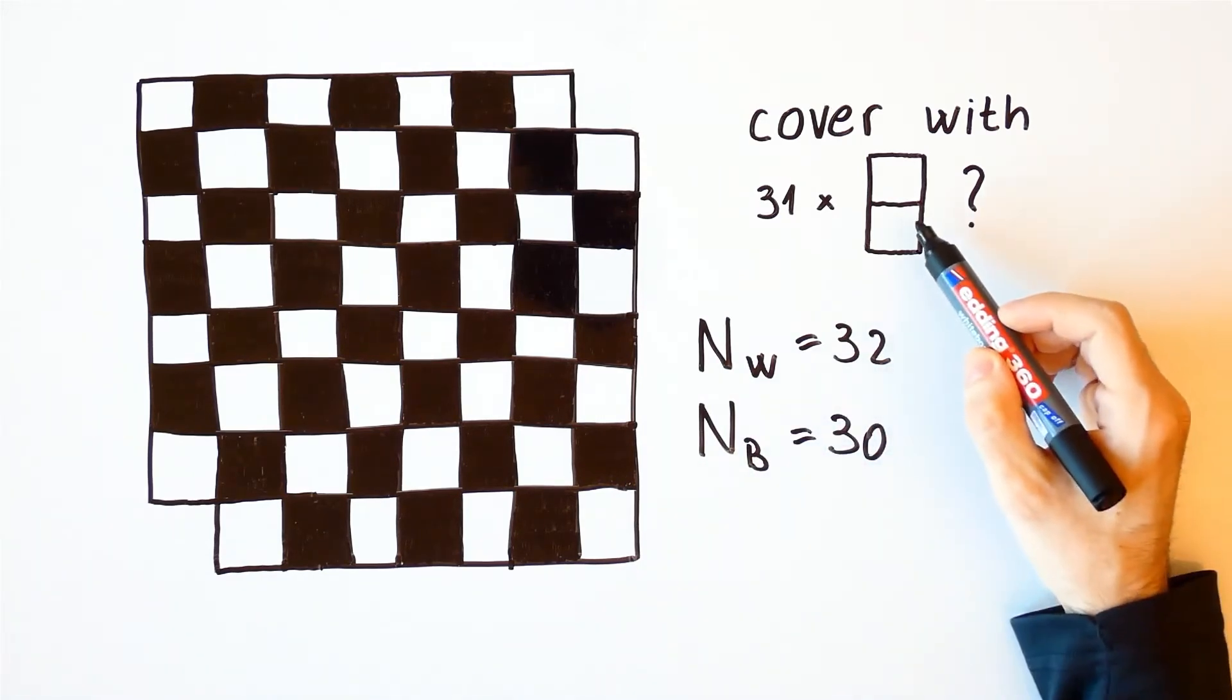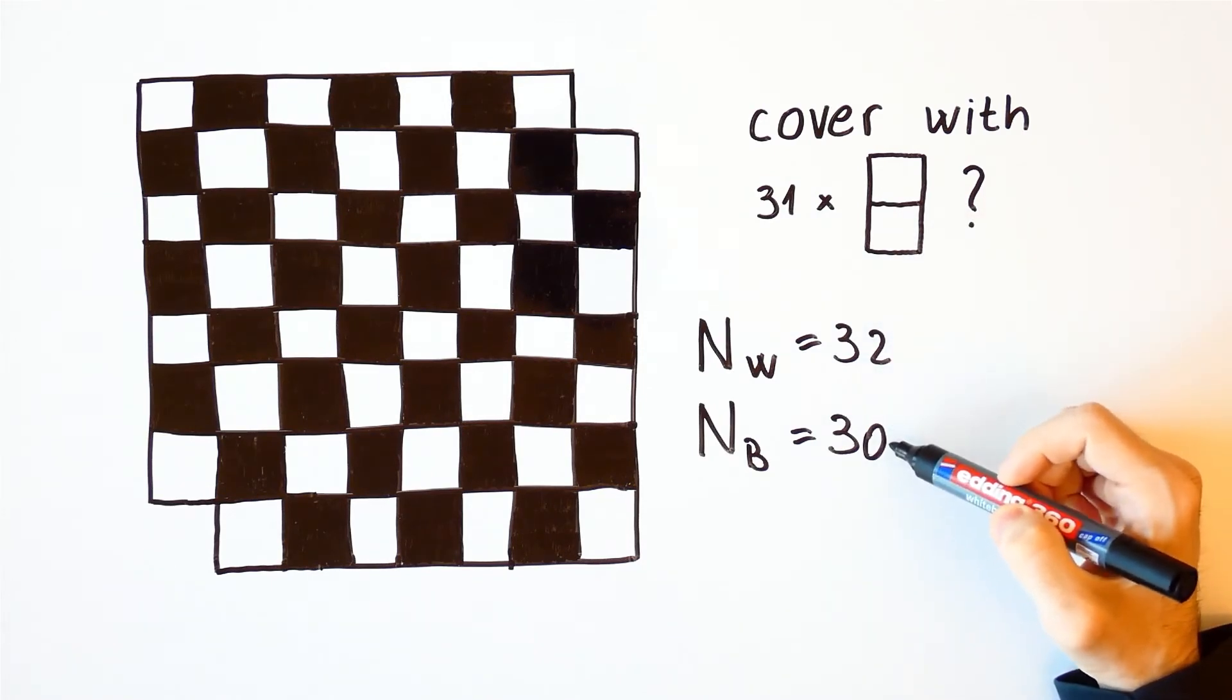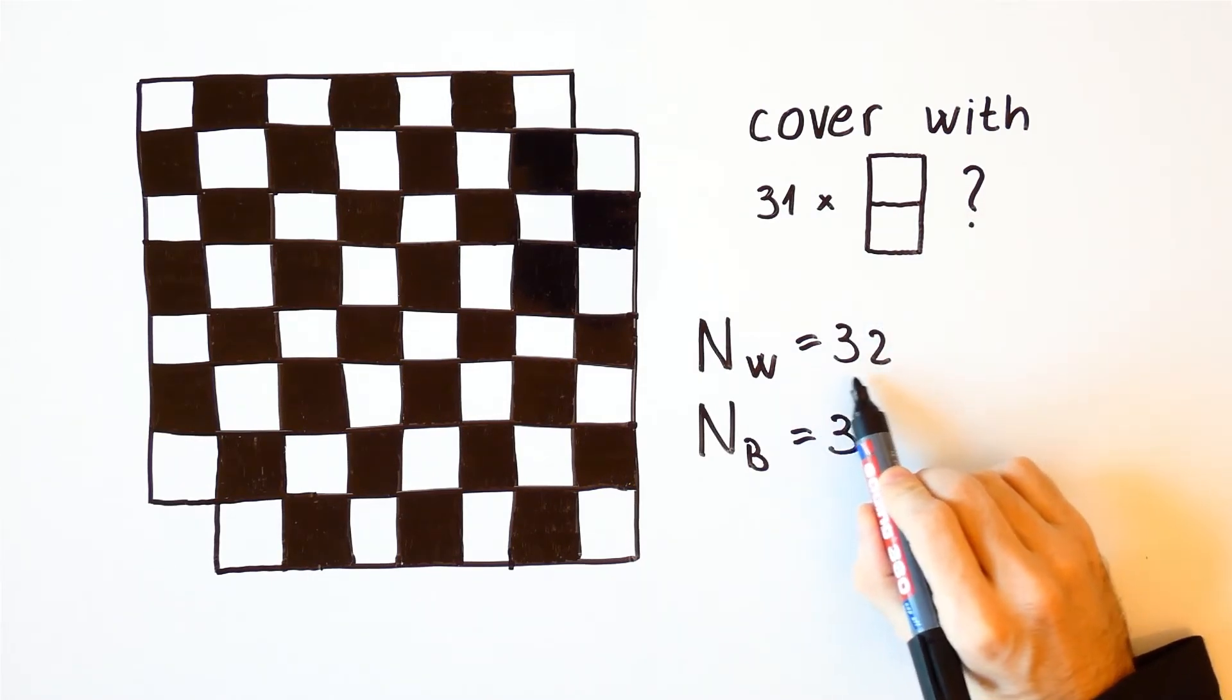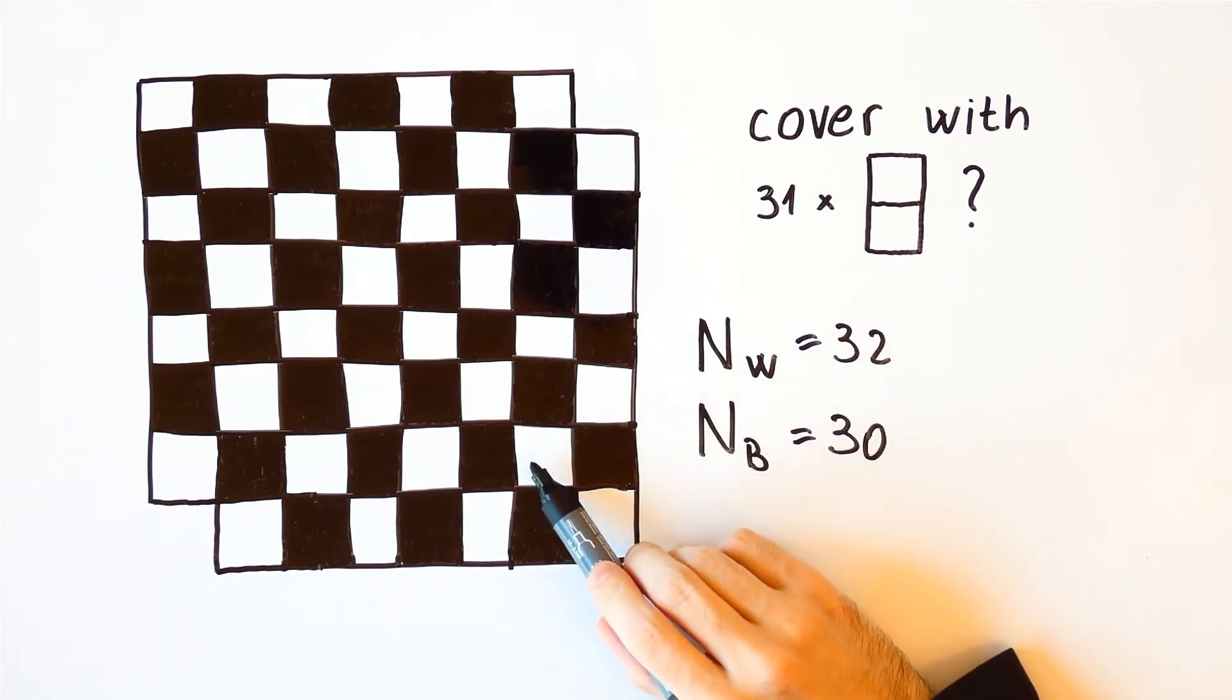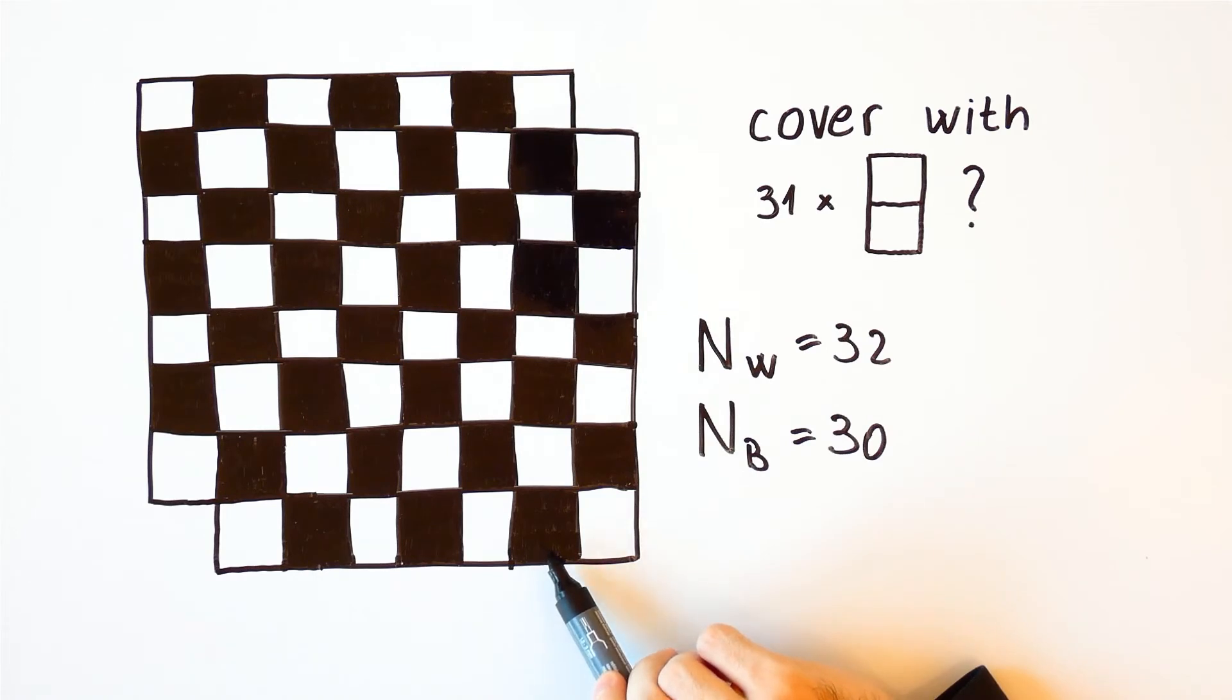But each domino can cover one white and one black square, so we won't be able to cover all 32 white squares. In fact, if we removed any two squares of the same color, we wouldn't be able to tile the remaining chessboard.